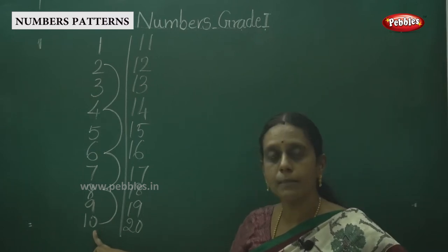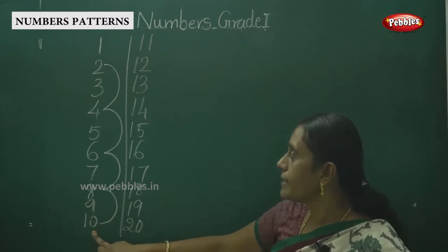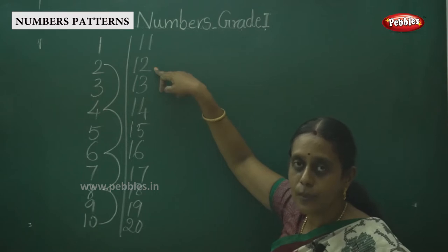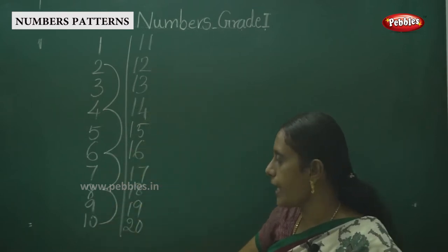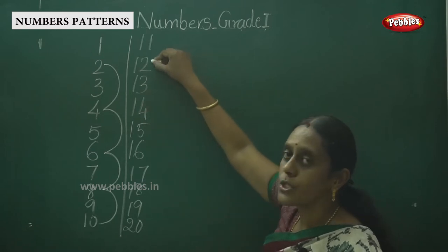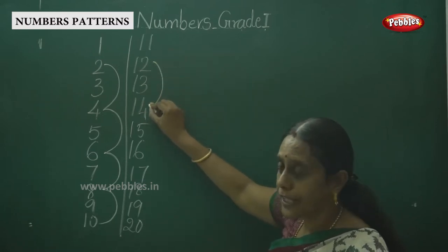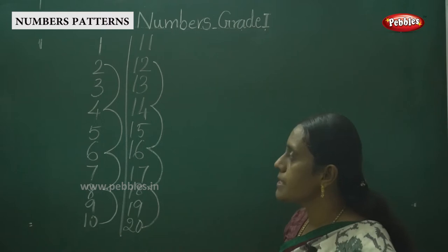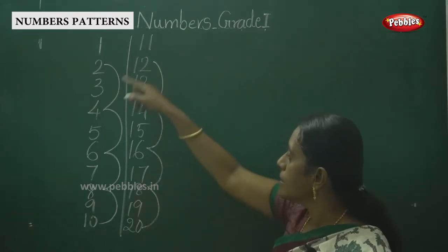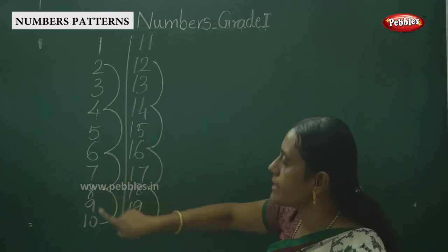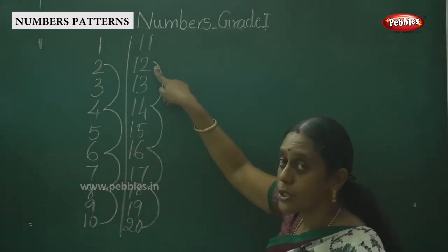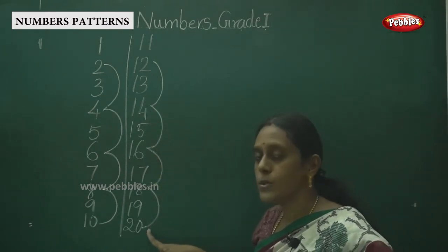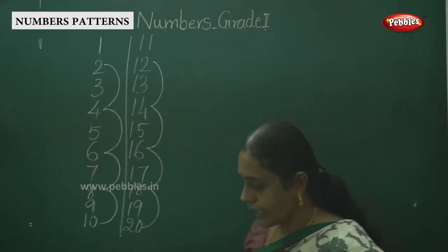Where we stopped at 10, we skip the number 11 and say 12. Next, skip counting by twos: from 10 say 12, then 14, then 16, then 18, and then 20. So the pattern goes: 2, 4, 6, 8, 10, 12, 14, 16, 18, 20.